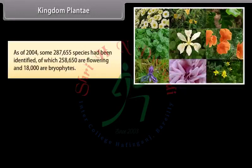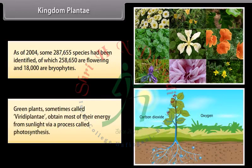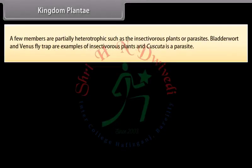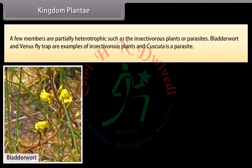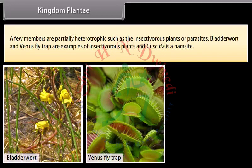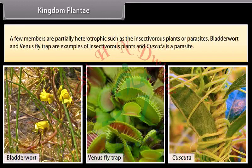As of 2004, some 287,655 species had been identified, of which 258,650 are flowering plants and 18,000 are bryophytes. Green plants, sometimes called Viridiplantae, obtain most of their energy from sunlight via photosynthesis. A few members are partially heterotrophic, such as insectivorous plants and parasites. Examples of insectivorous plants include bladderwort and Venus flytrap, and Cuscuta is a parasite.